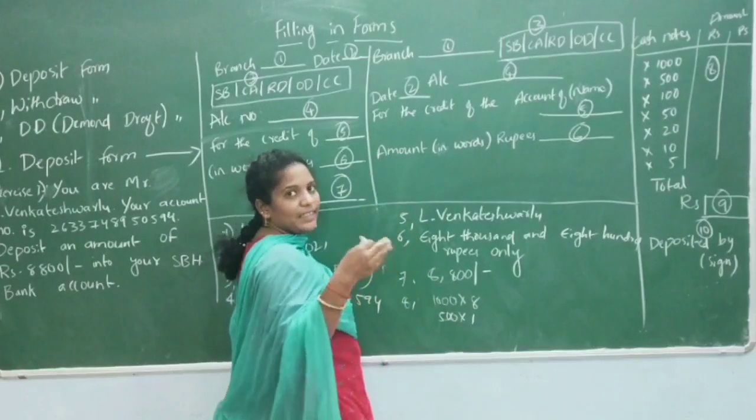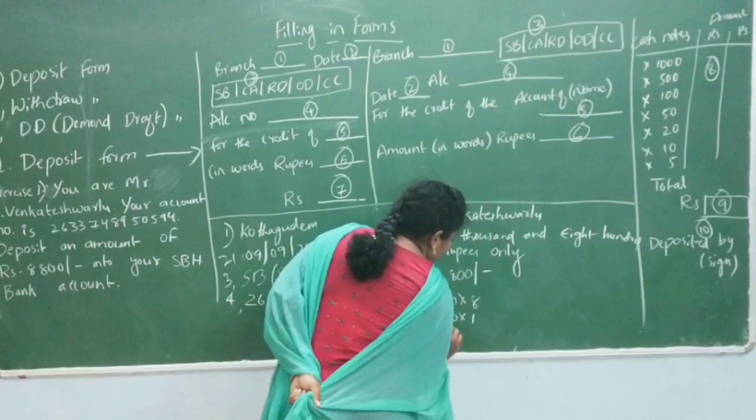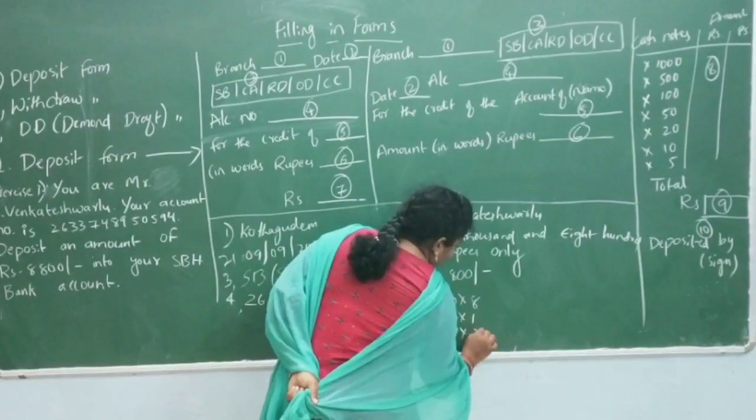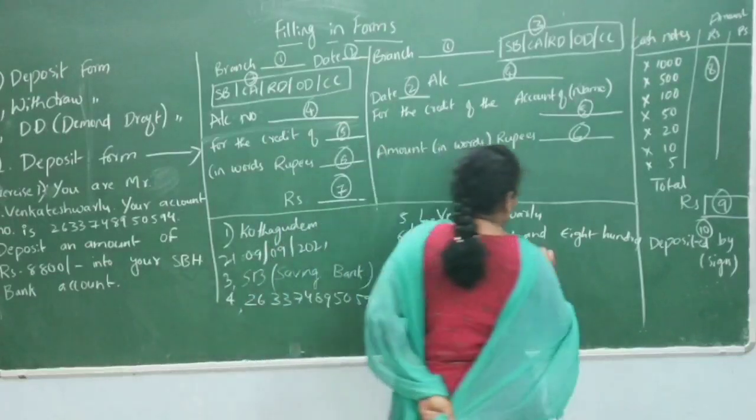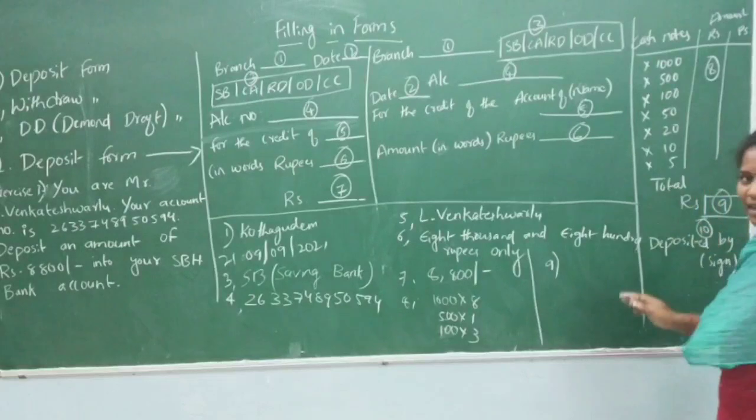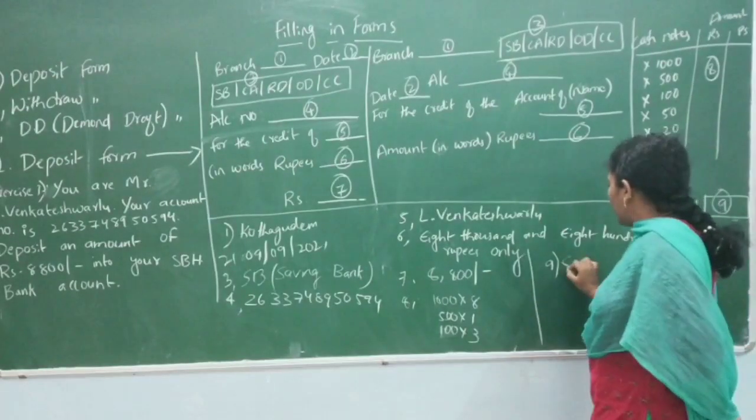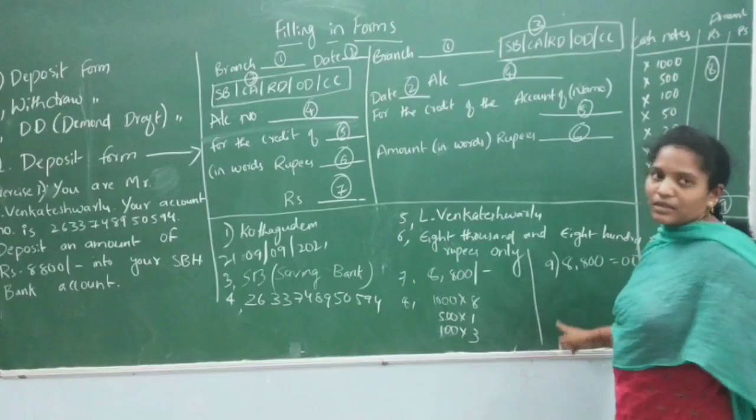Continue with the remaining denominations: one hundred rupee notes, fifty rupee notes, and smaller denominations like ten rupee notes or coins. The total comes to 8,800 rupees.